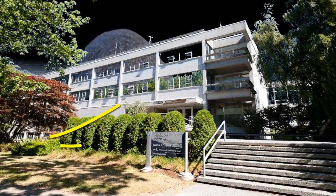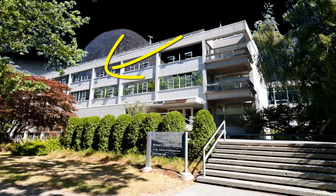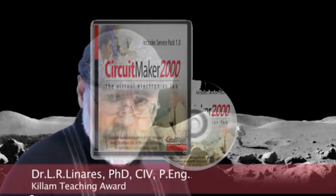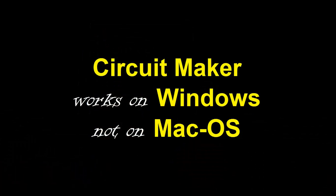In our course, we'll put the theory to the test in two lab environments. The electronics labs on the first floor, on the third floor and on the fourth floor in the MacLeod building during the scheduled lab sessions and also on the virtual lab provided by CircuitMaker 2000, which you can install in your own computers and which is available only for Windows, not for Mac OS.